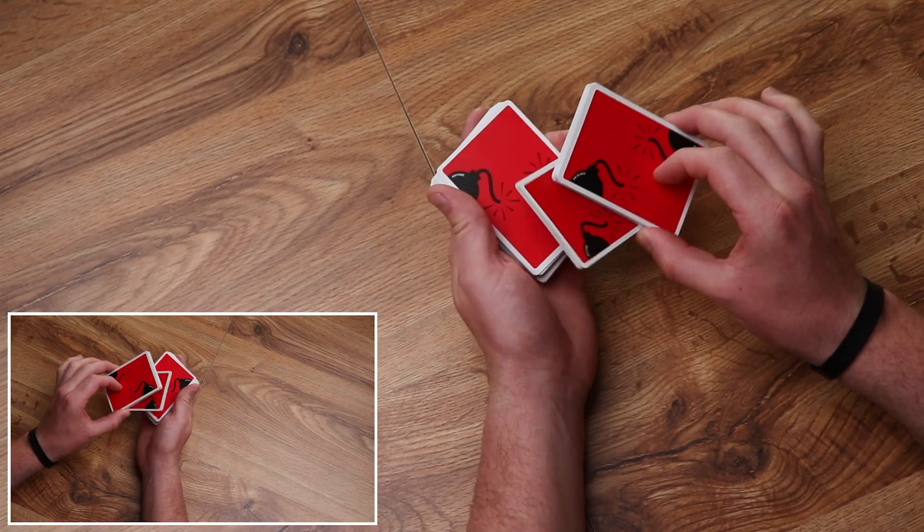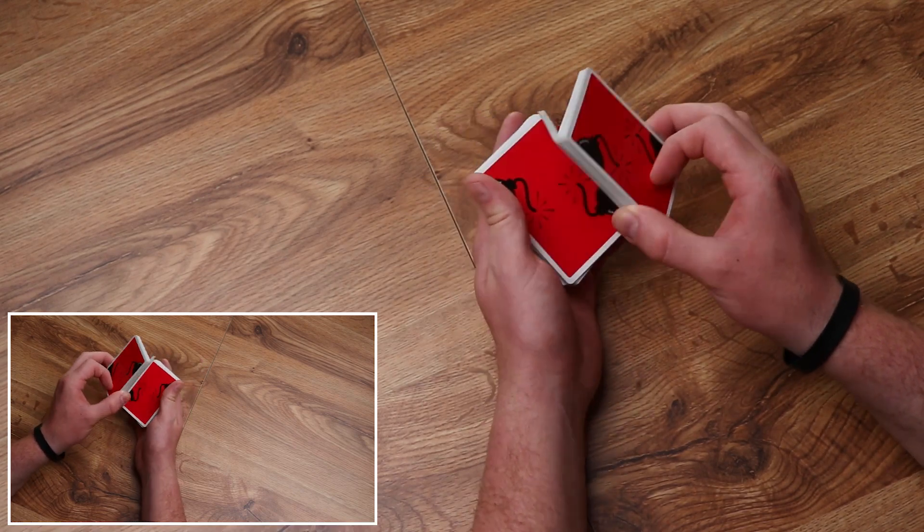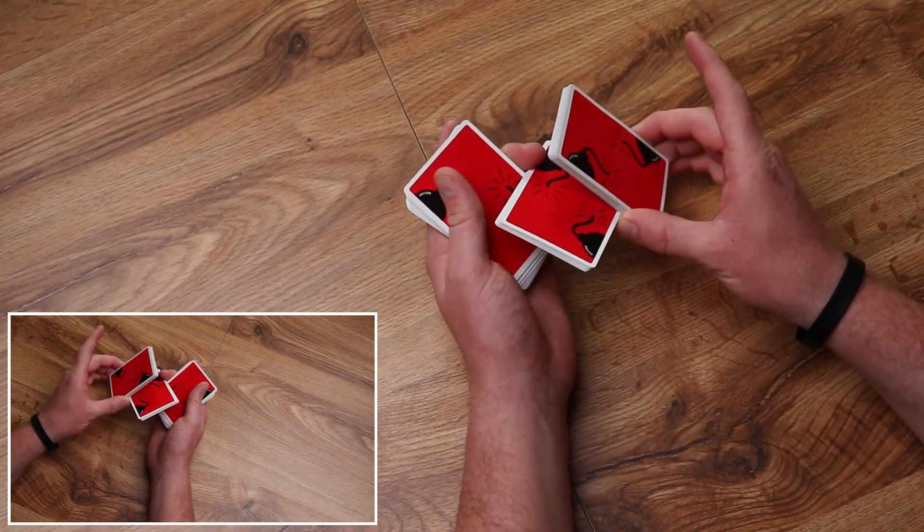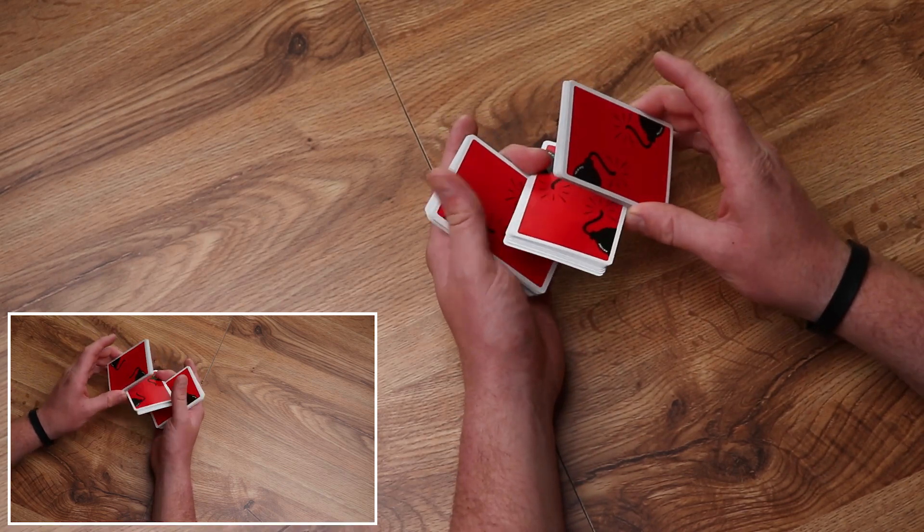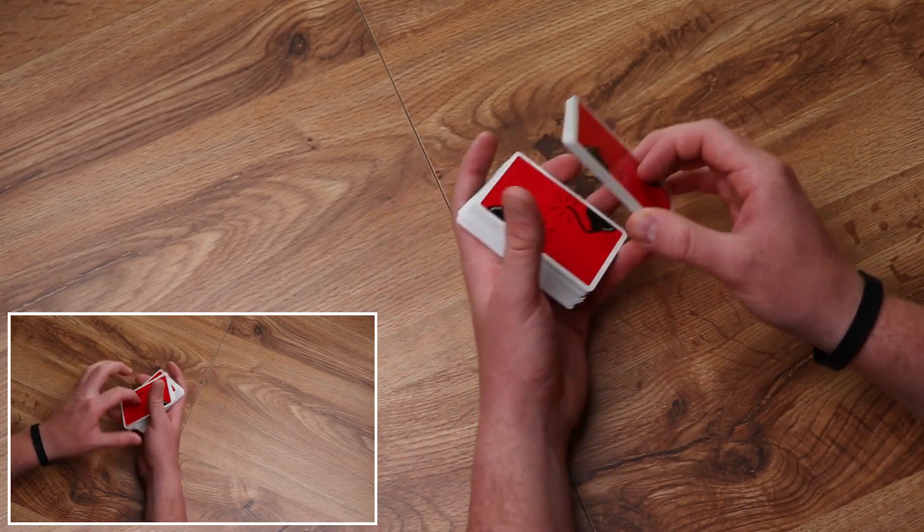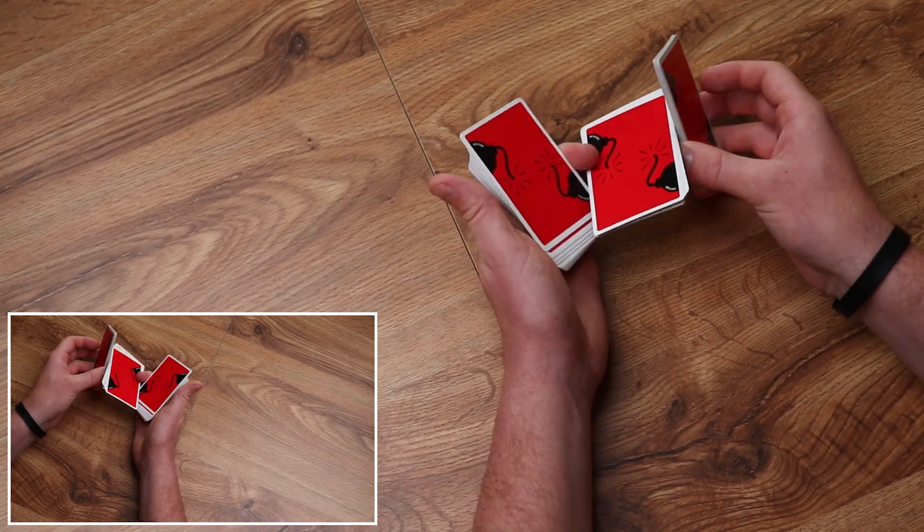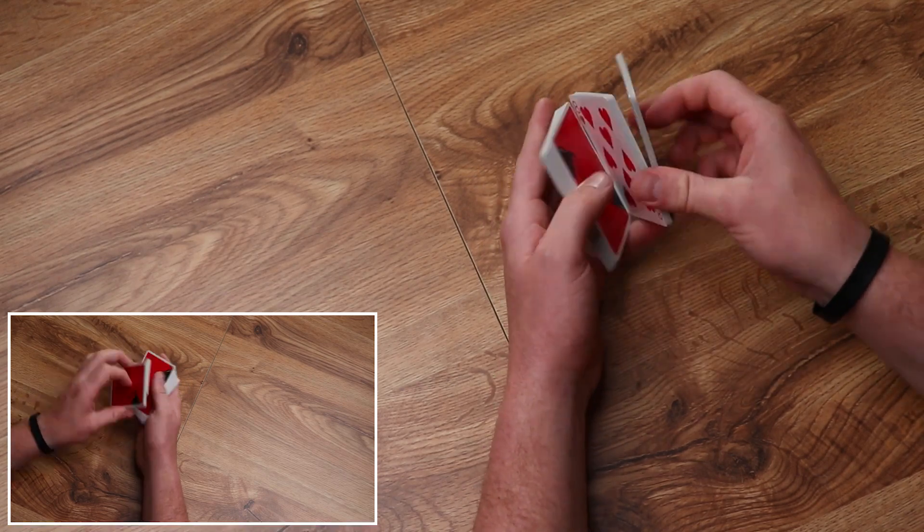You're essentially holding up this end with just your middle like this. What happens is you rotate around like this. You hold the packet in this sideways Z-grip. With your thumb on the long side here, your middle finger on this side and lift up like that.